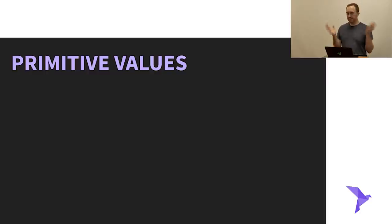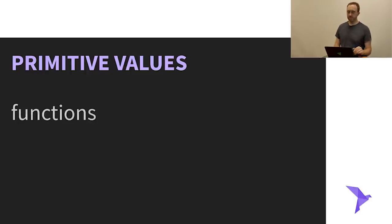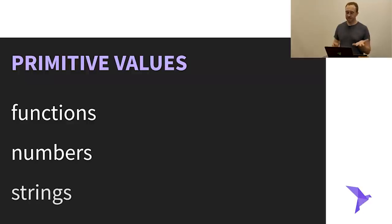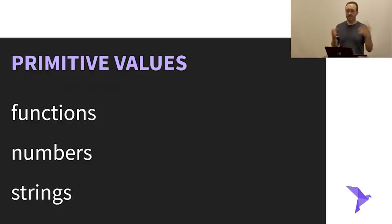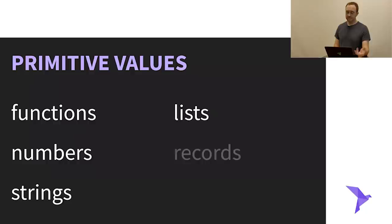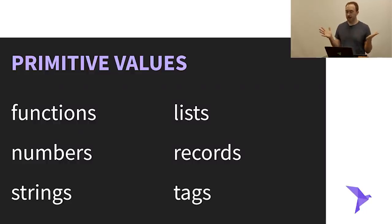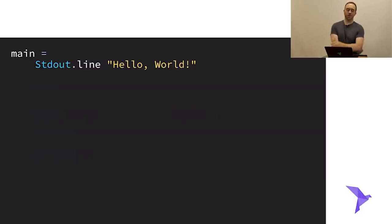Let's start with the language intro, starting with primitive values. Roc has six basic primitive values. We've got functions, numbers, and strings — those are scalar values, where you just have one thing going on inside of them. Then you have some collection primitives: lists, records, and tags. Starting with everyone's favorite example: hello world.